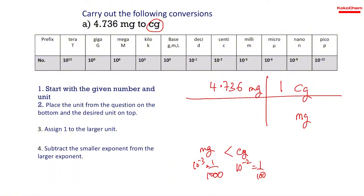Step 4: Subtract the smaller exponent from the larger exponent. The exponent for milligram is 10 to the power negative 3 (the smaller one) and for centigram it is 10 to the power negative 2 (the bigger one). So we compute negative 2 minus negative 3.